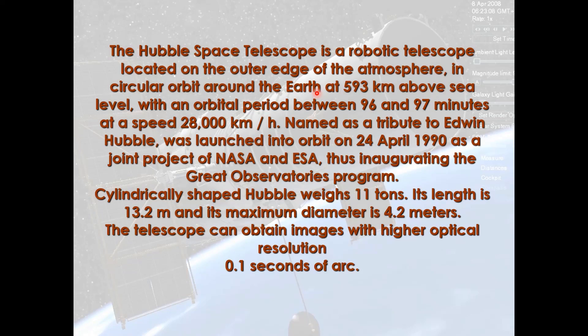This is basically a robotic telescope which is orbiting our atmosphere. It is placed at a distance of around 593 kilometers above sea level, and it orbits at around 28,000 kilometers per hour. It was named after the great astronomer Edwin Hubble.